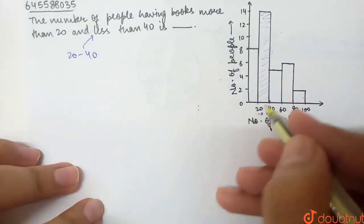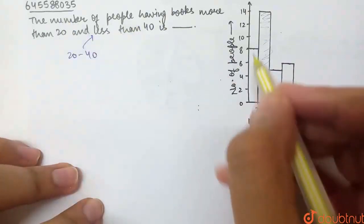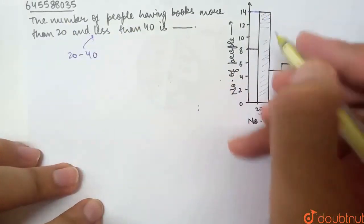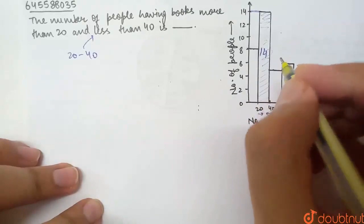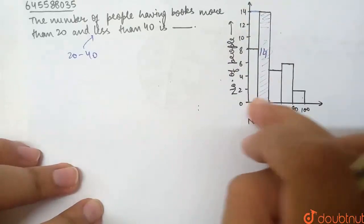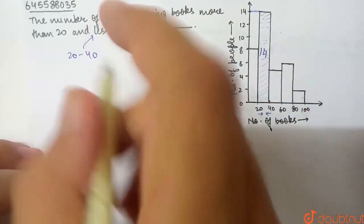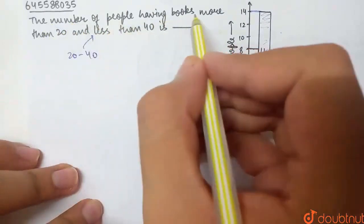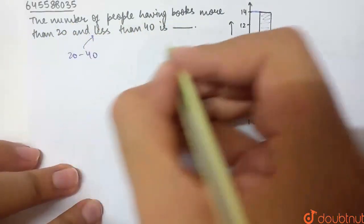So, here is our frequency. That is, the number of people. What is our number of people? This is equal to 14. So, what does this represent? Here is our 20 to 40 books. Hence, the number of people having books more than 20 and less than 40 is 14.